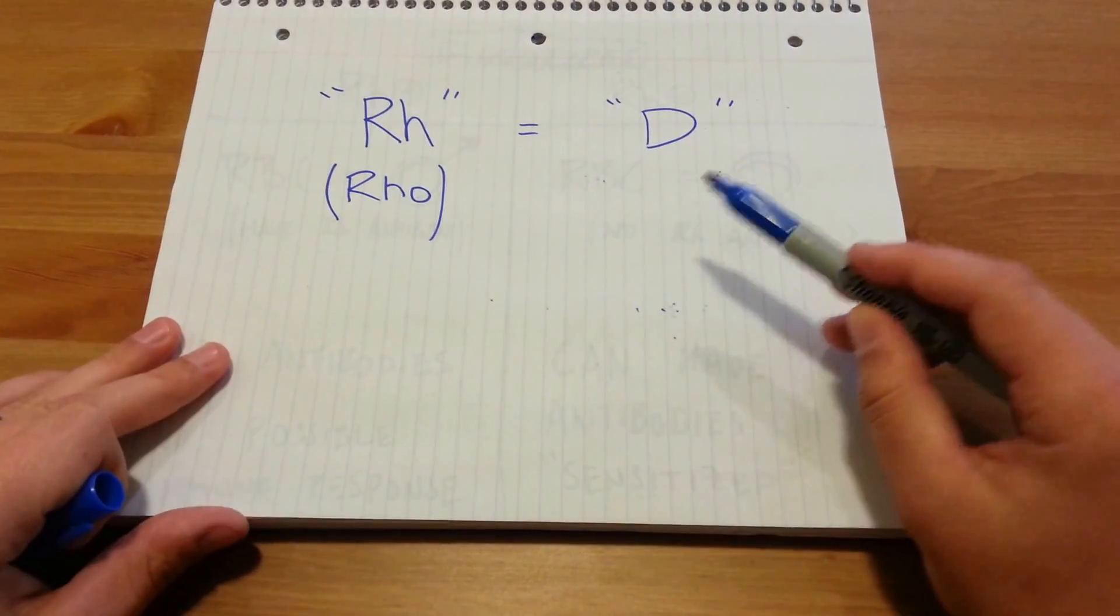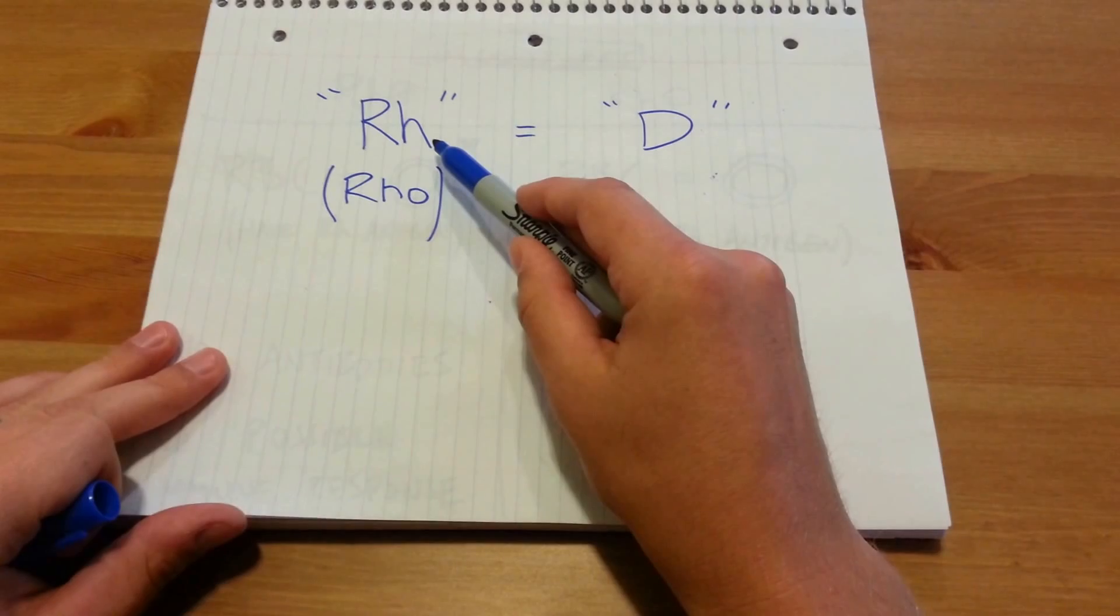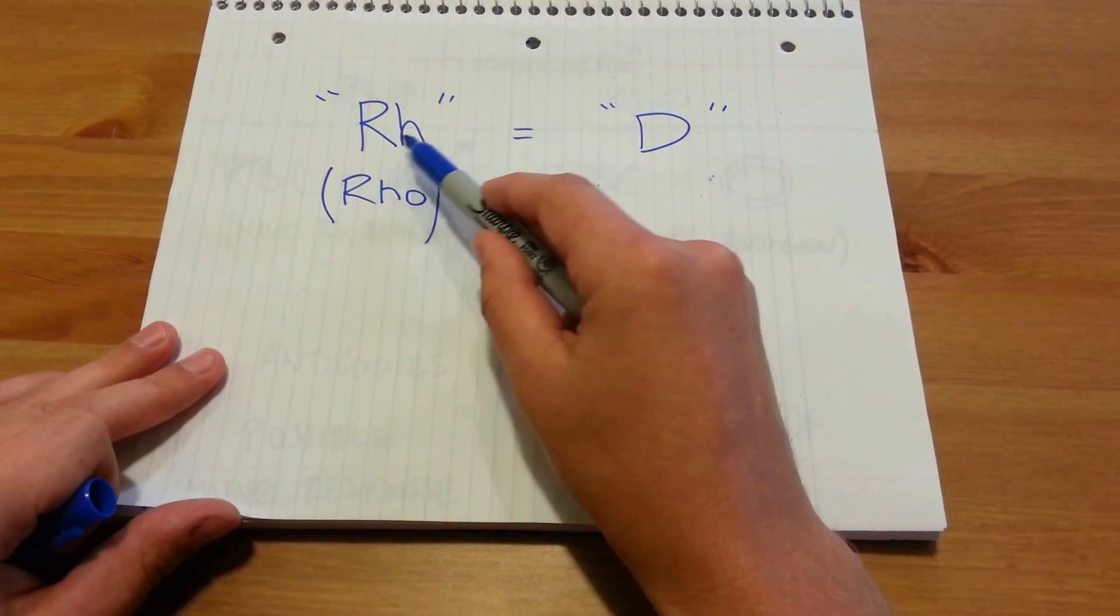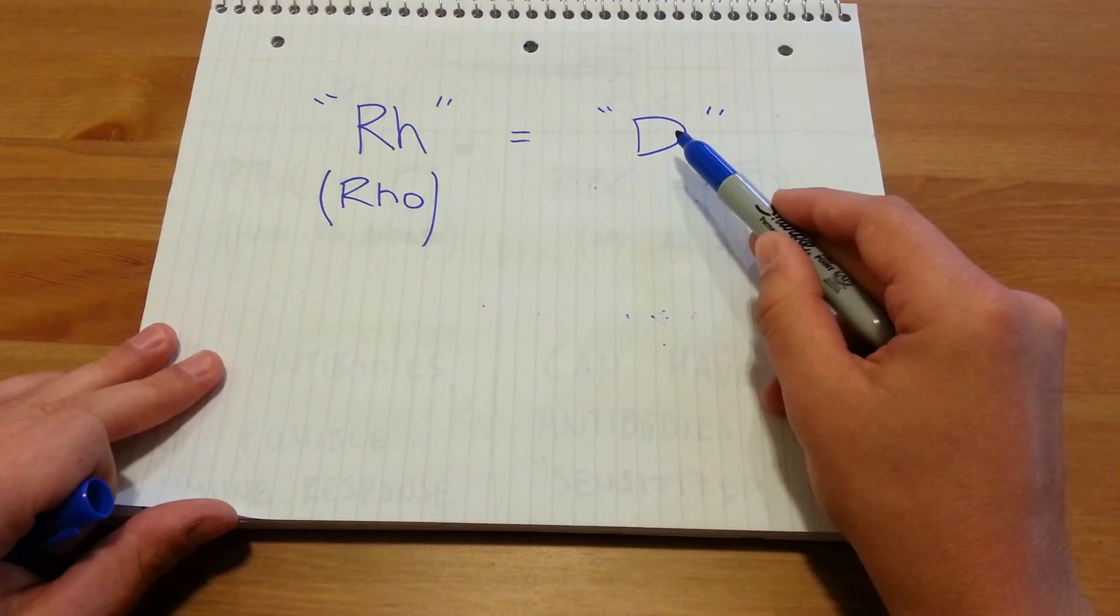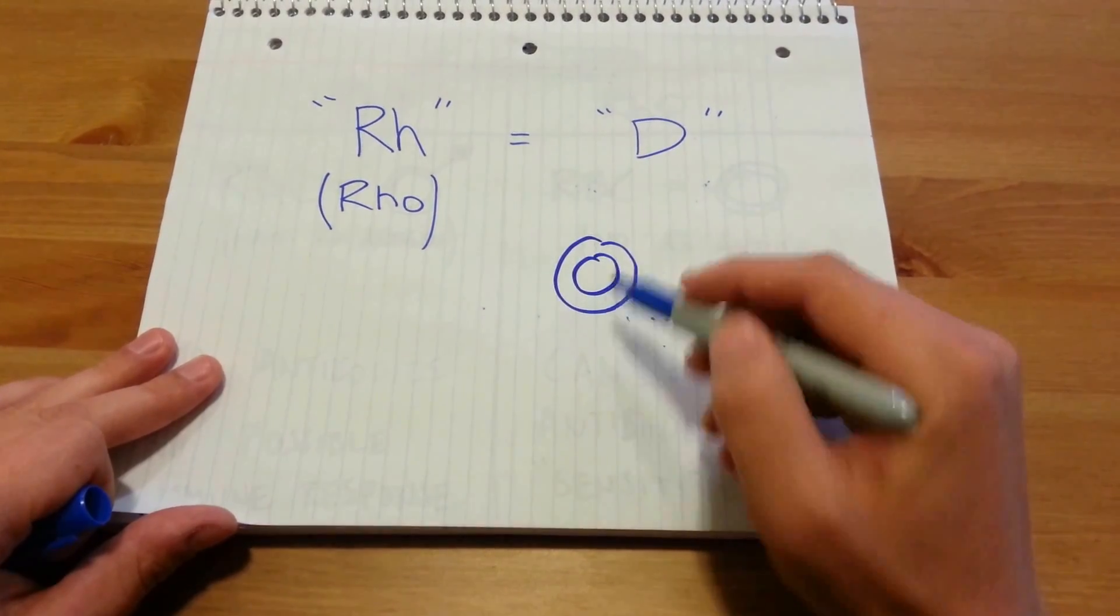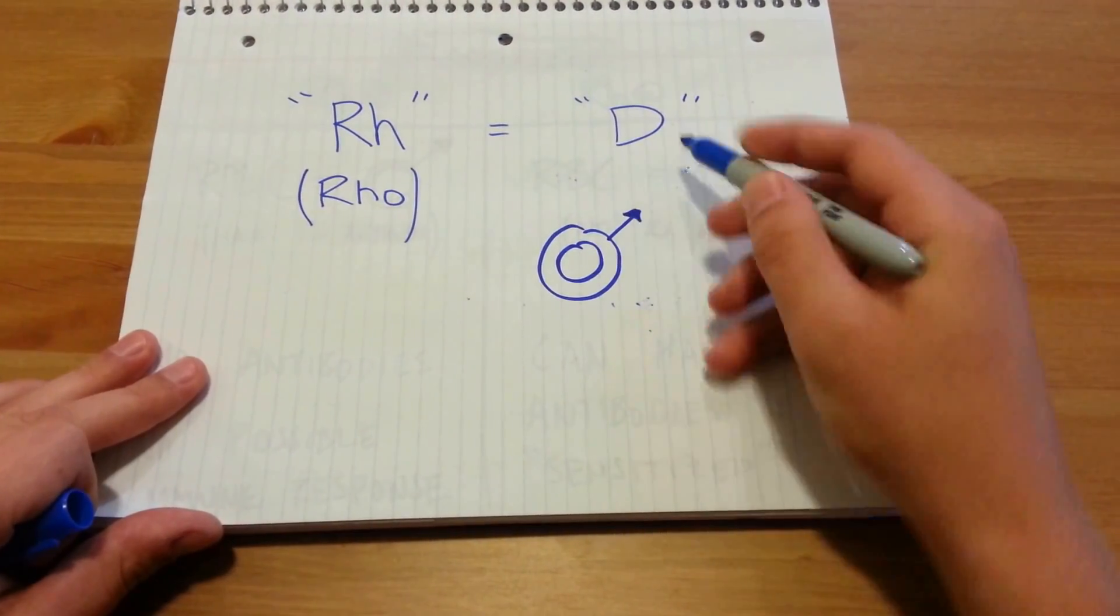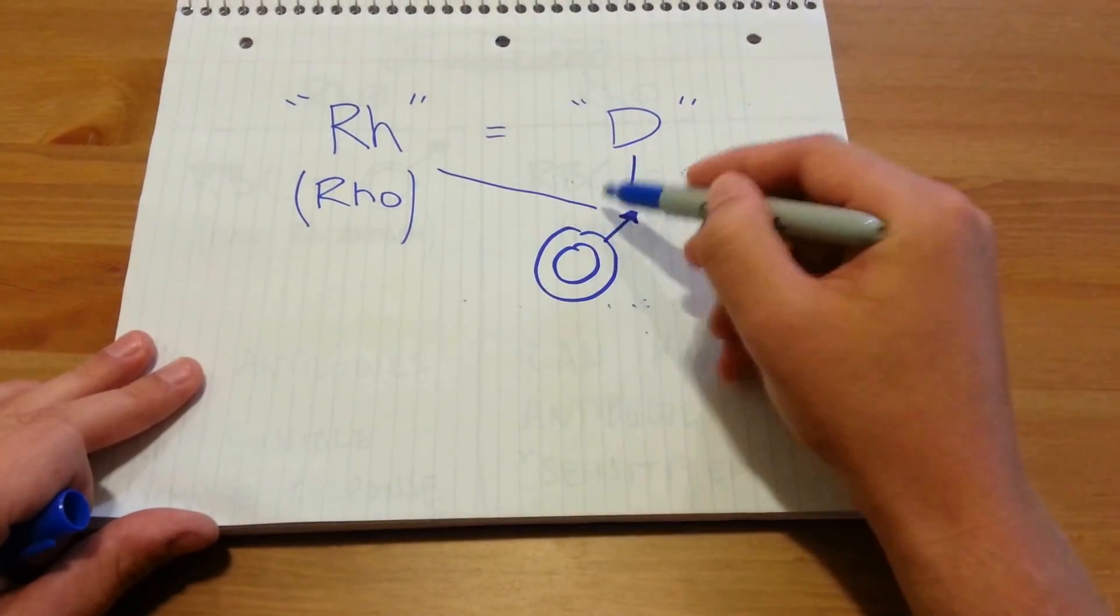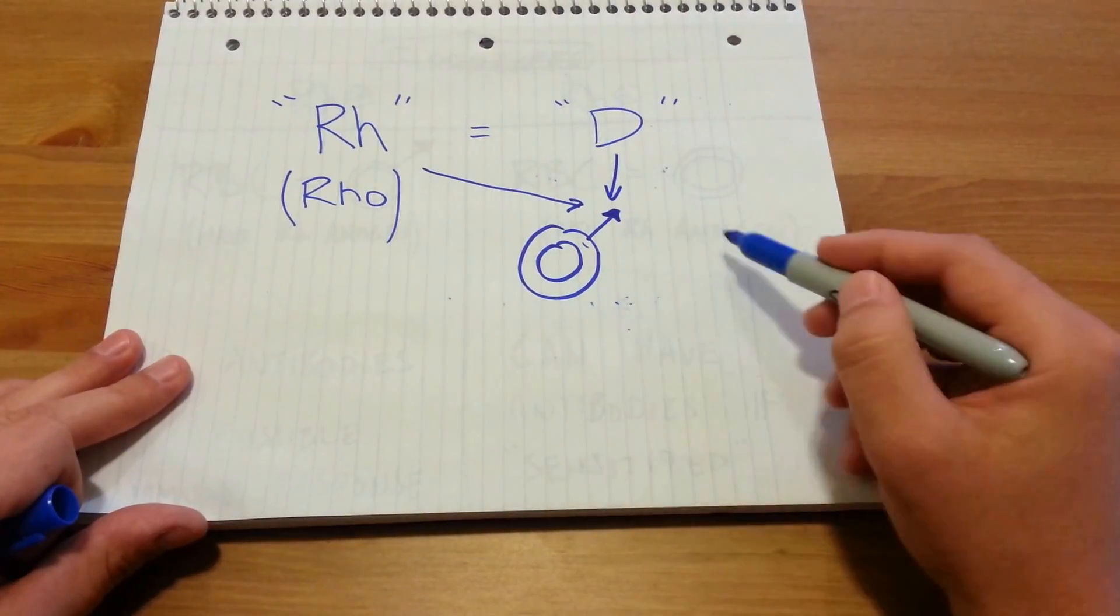Now an introduction to where Rho or RH comes from, it's actually a name that comes from the rhesus monkeys. So that's where the RH comes from. It also can be called the D antigen. So the Rho or D antigen is on a red blood cell, which the symbol for is going to be this in this little presentation. And that right there is going to be that D or Rho antigen.